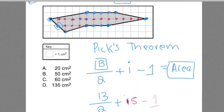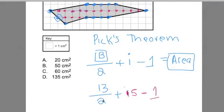And then I'm going to subtract 1 from that. So 13 divided by 2 is 6.5 plus our 15 minus 1. This would be like 21.5 minus 1 would get you roughly 20.5.